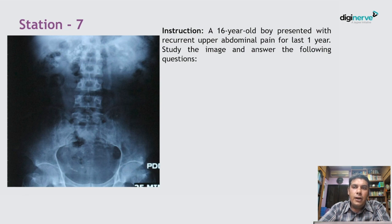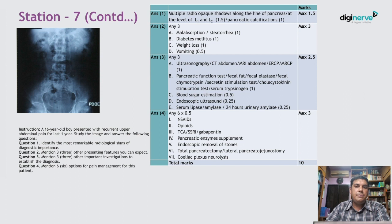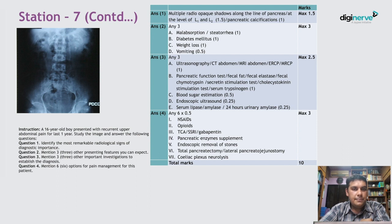Station 7: A 16-year-old boy presented with recurrent upper abdominal pain for the last one year. The radiological signs of diagnostic importance are multiple radiopaque shadows along the line of the pancreas — at the level of the L1 and L2 vertebrae — which represent pancreatic calcifications. Other presenting features may include malabsorption or steatorrhea, diabetes mellitus, weight loss, and vomiting.